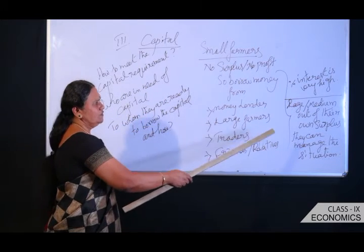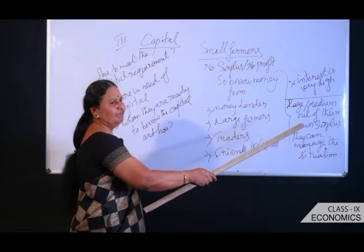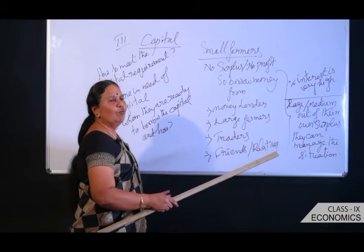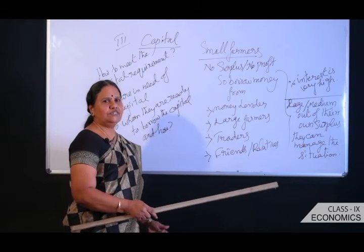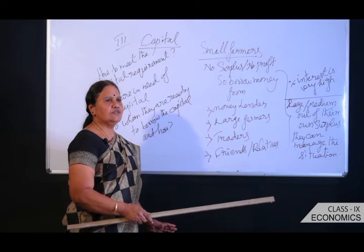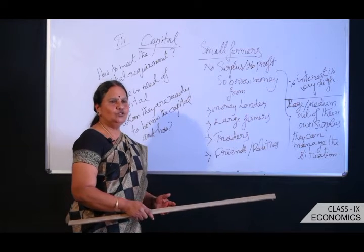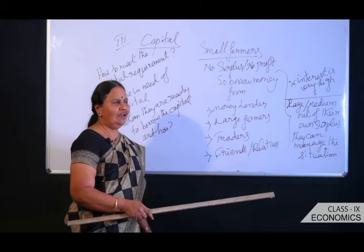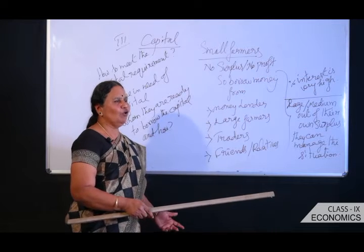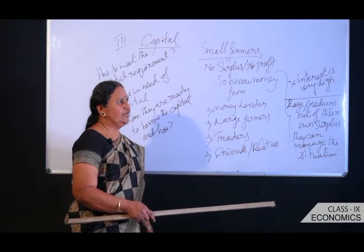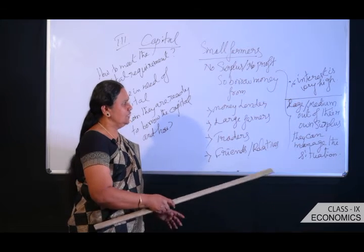Rich, large, and medium farmers have no need to borrow money because they have huge harvests, huge production, huge sales, and huge profit — they are rolling in money. But small farmers, those with less than 2 hectares of land, face very low production and low profit after harvest, making it difficult for them to meet their capital needs.